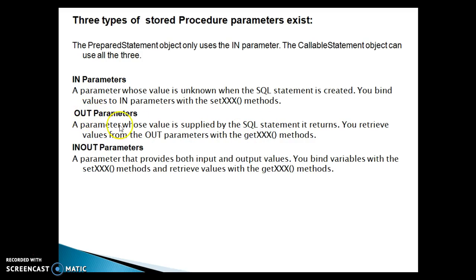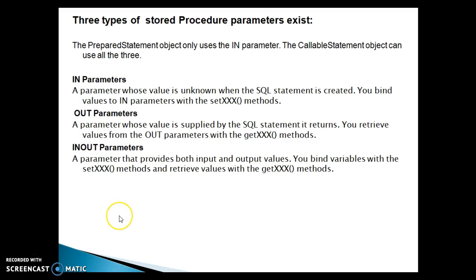An OUT parameter is what the stored procedure returns after execution. IN/OUT is a combination of both — it works as both an input parameter and an output parameter. It provides both input and output values: you bind the variable with the setXxx method and retrieve values with the getXxx method. So using IN/OUT you can pass an input value and also receive an output value from the stored procedure.